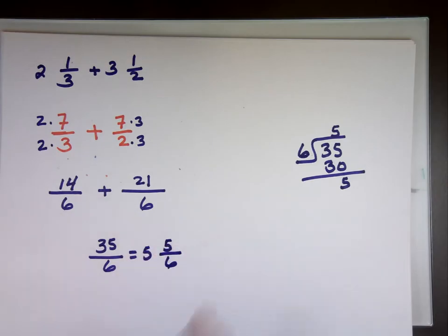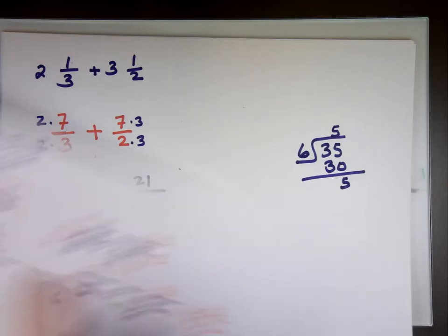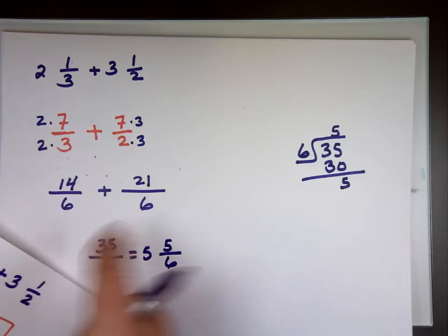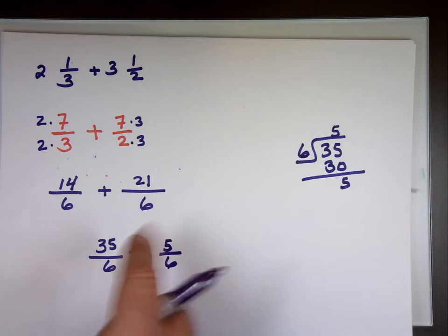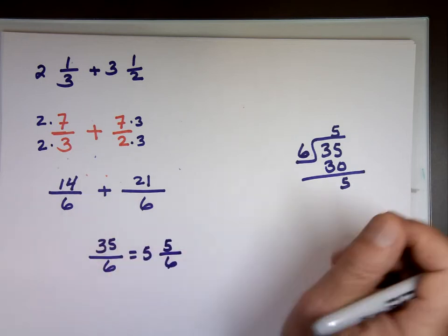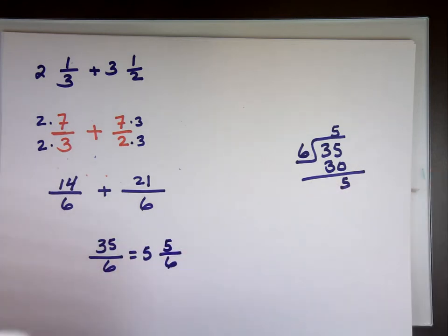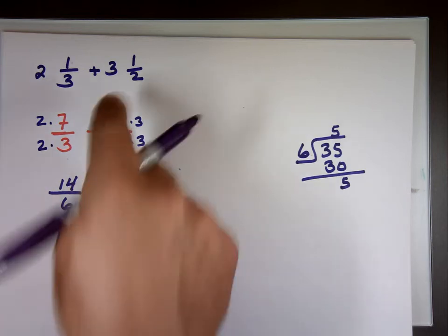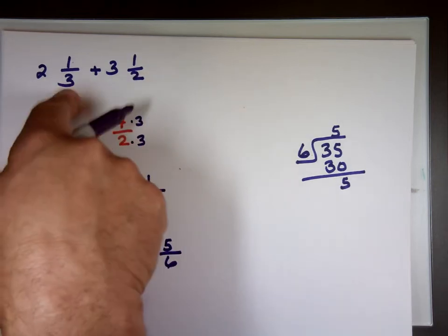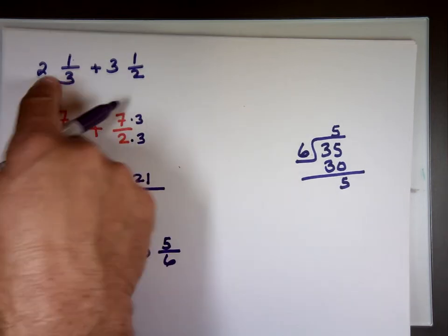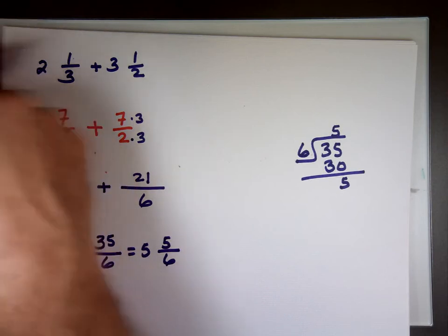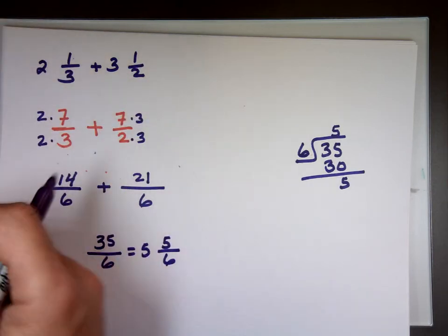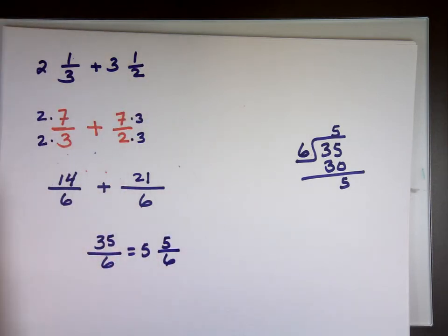This method looks like more steps, but it's actually easier to deal with — especially when subtracting and the fraction being subtracted is larger. With the other method, you discover too late that you need to borrow, and have to go back. This method handles all those steps automatically. I'll practice addition and subtraction using this method.